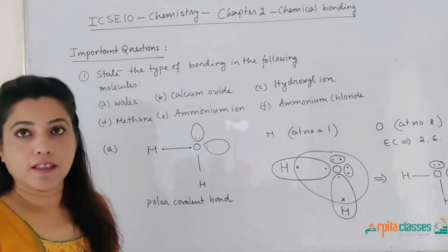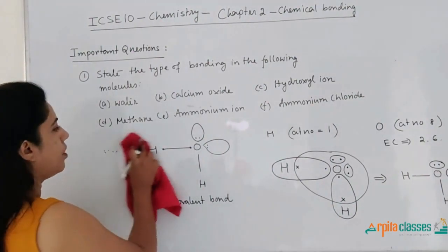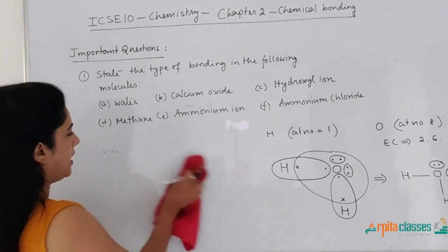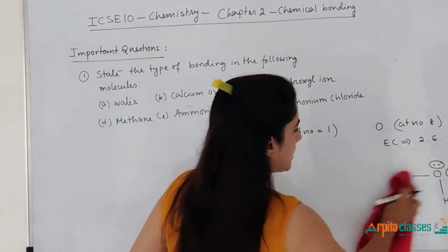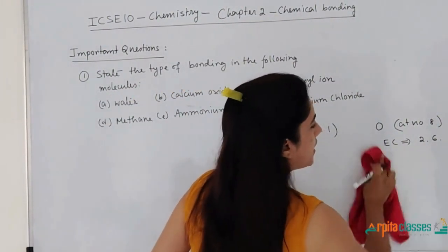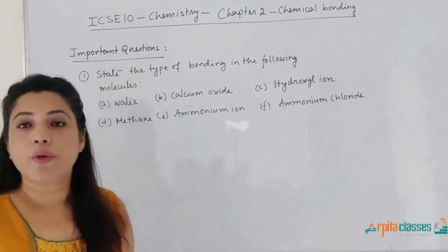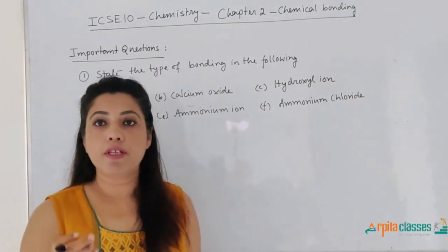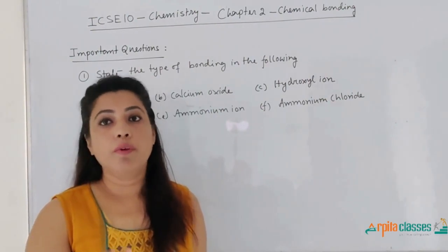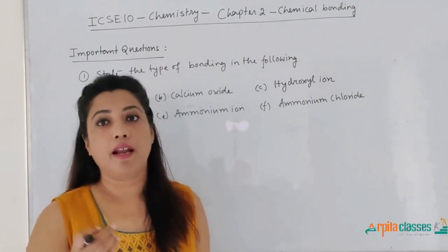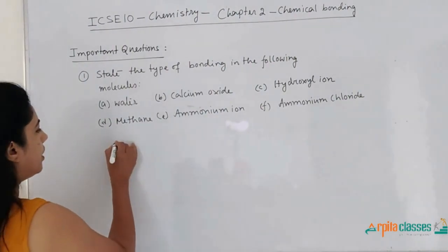Let us see the next compound, that is calcium oxide. We know calcium is a metal and oxygen is a non-metal. So there is a large electronegativity difference between calcium and oxygen. Therefore, the bond will definitely be an electrovalent bond or an ionic bond.